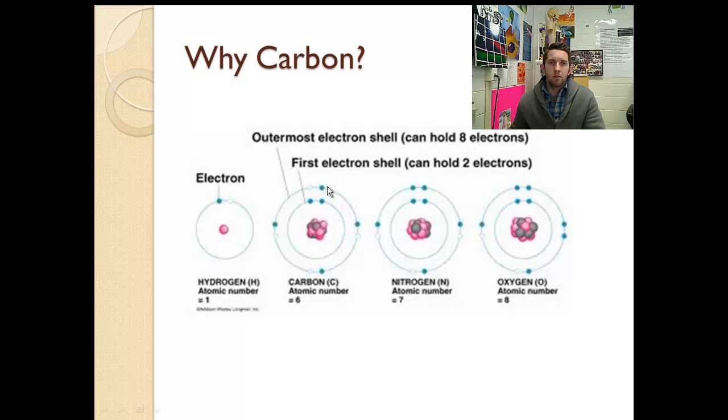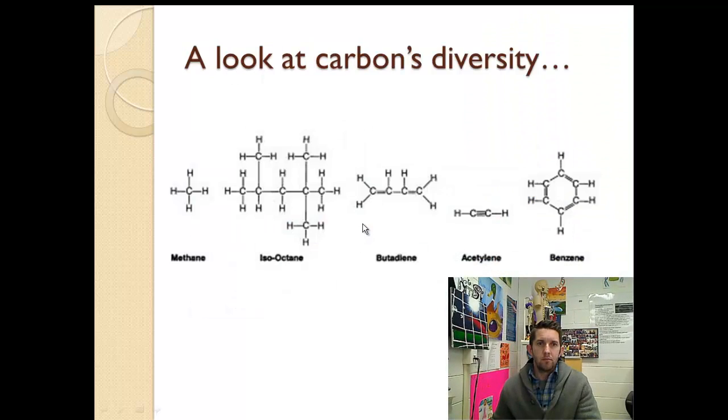So this valence electron is going to want to pair with another. This one's going to want to pair. So is this one and this one. So the fact that it has those four valence electrons makes it extremely willing to bond in all directions, whereas nitrogen has three valence electrons available. Hydrogen only has one. Here's oxygen with two. Its other two are already paired up, so they're spent as far as bonding goes. So this is why it's so diverse. It has these four opportunities for bonding.